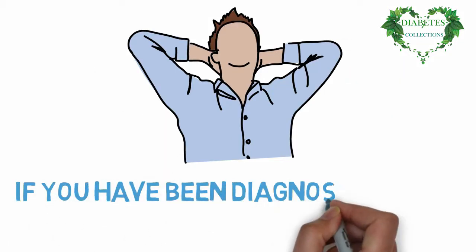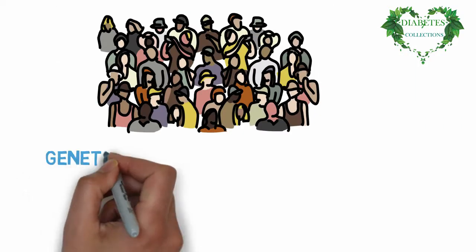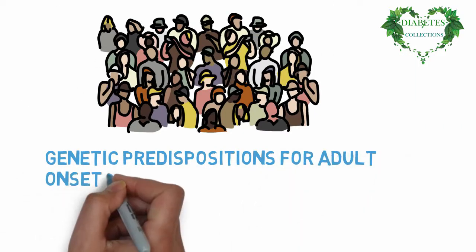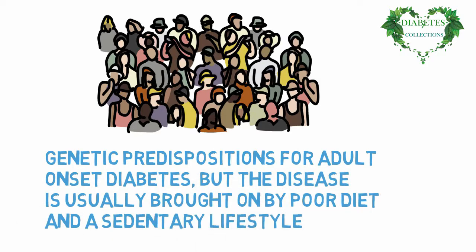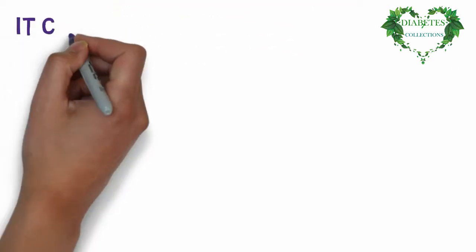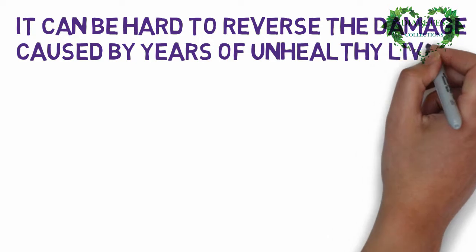If you have been diagnosed with adult-onset type 2 diabetes, you may be able to control your condition through diet and exercise. Many people have genetic predispositions for adult-onset diabetes, but the disease is usually brought on by poor diet and a sedentary lifestyle. It can be hard to reverse the damage caused by years of unhealthy living.